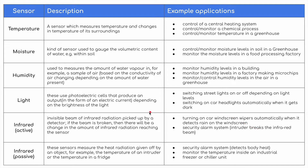Passive infrared sensors measure the heat radiation given off by an object — for example, the temperature of an intruder, or the temperature of a fridge. These are again used in security alarm systems, maybe detecting body heat, and for monitoring the temperature inside an industrial freezer or a chiller unit.